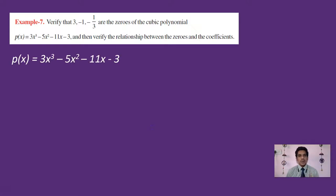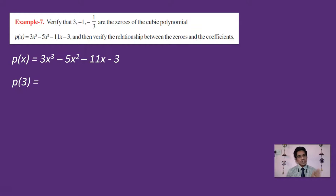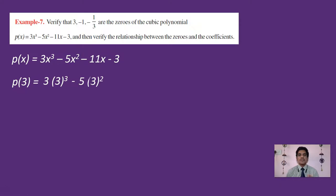Let us do the first part. The polynomial is 3x³ - 5x² - 11x - 3. We have to find P(3). Wherever there is x, substitute 3. So 3x³ becomes 3 of 3³, minus 5x² becomes -5 of 3², minus 11x becomes -11 of 3, and the constant is -3.